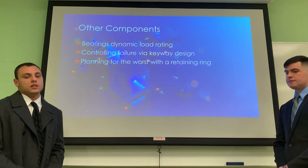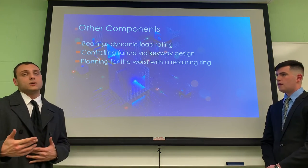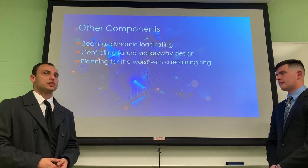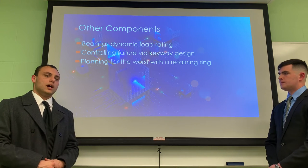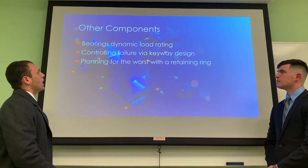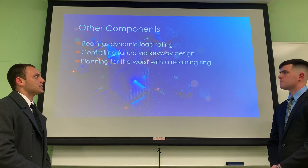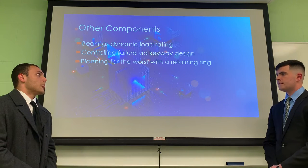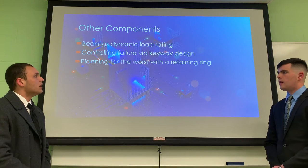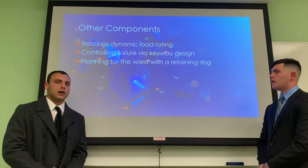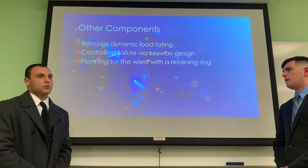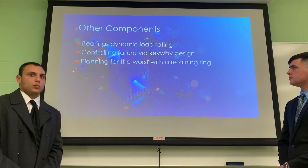We also wanted to verify that the dynamic load rating of the bearings we selected would be sufficient for the loads impressed by the motor. We did this by looking at the pressure angle that the chain would create between the sprocket and be transferred to the bearings. It turned out that the allowable dynamic load rating of the selected bearings was about 2,600 pounds and they would only be subject to about 500 pounds, so that worked out well. We also planned for the worst with our QA design — we selected a material softer than all other materials in the drivetrain to make it the component most likely to fail, but which would still transmit the required torque. We also included a retaining ring on the output shaft, capable of withstanding about 3,600 pounds of thrust load, far more than any abnormal circumstances would require.